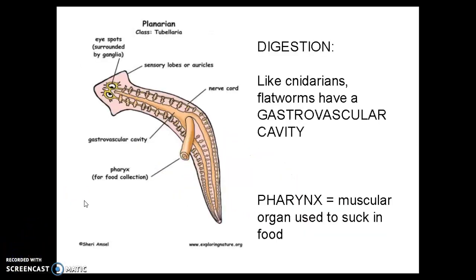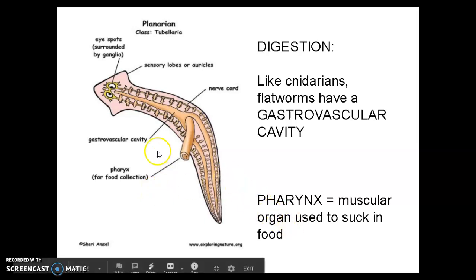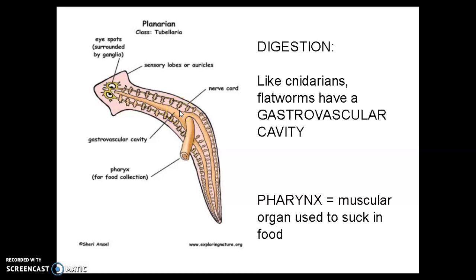In terms of digestion, flatworms are similar to cnidarians in that they only have one opening where food and waste enters and exits, and they have a gastrovascular cavity. The planaria has a long tube coming from the bottom called the pharynx, which is for food collection. It sucks food into the body and into the gastrovascular cavity, digests it, and waste comes out that same end.